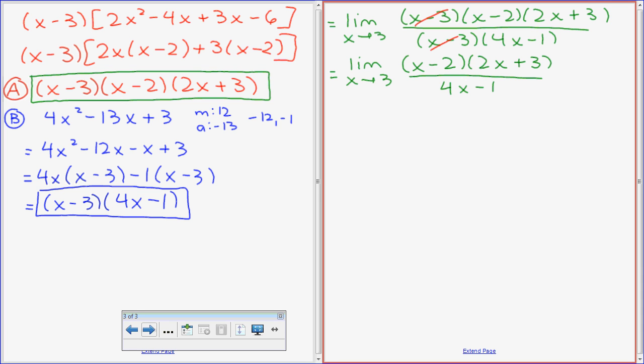All right Teresa, when you look at this question, why are you happy at this moment? This is equal to limit as x approaches 3, x minus 2, 2x plus 3 all over 4x minus 1. I have one step left. What's the last step here? Substitute 3. So everywhere I see an x, substitute 3. That turns into 1 times 9 all over 11, which is 9 over 11.